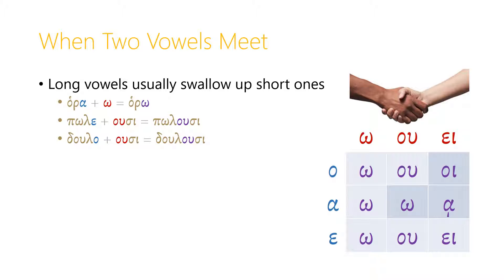Fortunately, there are quite predictable patterns about how these vowels combine or collapse together. Long vowels like eta or omega, or diphthongs like ου or αι, will usually swallow up the short vowels at the end of the stem. Hora, when you add the omega, will just become horao. Poleo, when you add the usi third person plural ending — since the omicron-upsilon diphthong is long by definition — polusi is what results; the υ just swallows up the epsilon. Likewise, when the short omicron at the end of doula meets the υ on usi, it's swallowed up and we just have doulusi.